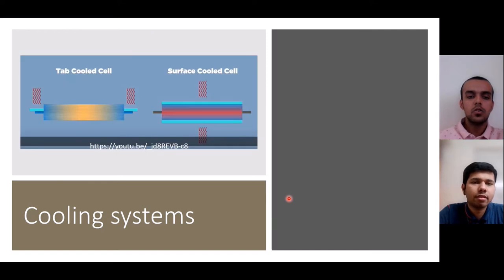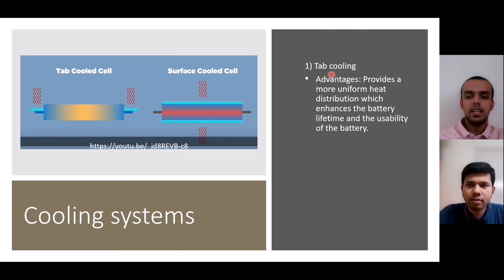Cooling systems are an important part of any battery pack design. There are two main types of cooling systems: tab cooling systems and surface cooling systems. In tab cooling systems, the aluminum tabs are connected to each battery which can conduct the heat outside of each module. These tabs are then cooled instead of cooling the battery directly. This allows for a more uniform cooling of the entire battery pack.